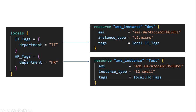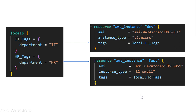Another tag defined is hr_tags where the key is 'department' and value is 'HR'. I want to specify both tags on two EC2 instances. So in the resource block I reference locals.it_tags for the IT department EC2 instance, and locals.hr_tags for the HR instance. When applied, one EC2 instance is tagged department=IT and the other department=HR. That's how locals are used.